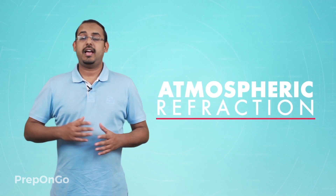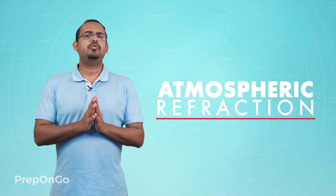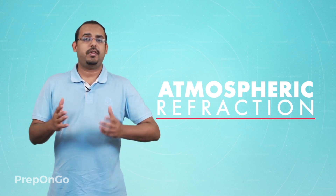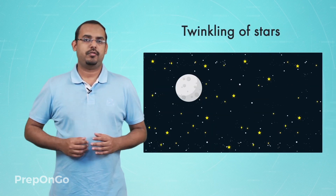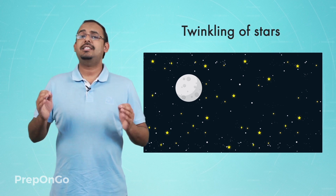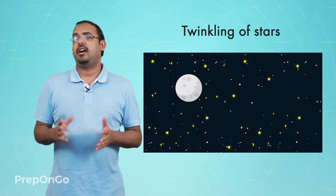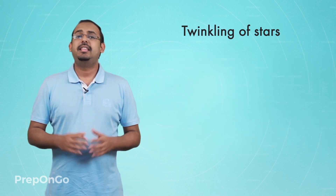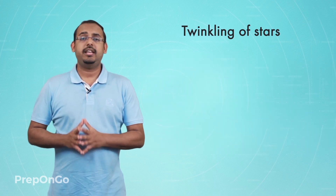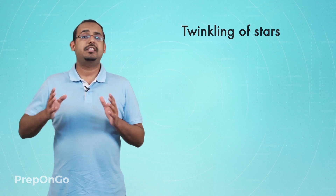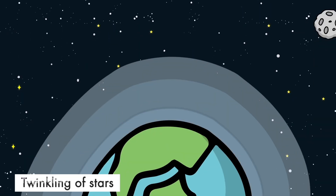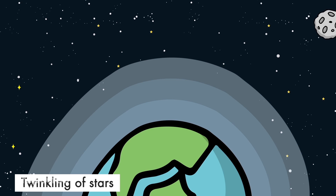Hello everyone. In this lecture, we'll talk about the refraction of light that occurs due to the presence of various layers of air in the atmosphere of the earth. I'm sure all of you must have observed the phenomenon of twinkling of stars. On a cloudless night, the sky is beautiful with the presence of all these stars and our moon. The twinkling of stars is actually an effect of the refraction of starlight when it travels through the various layers of air present in our environment.